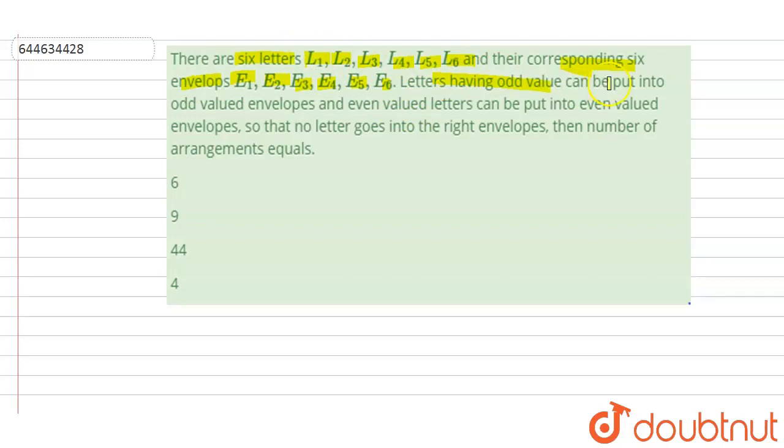L3, L5 can be put into the odd valued envelopes. Odd value envelopes means they can be put in E1, E3, and E5. And even valued letters means L2, L4, L6 can be put in the even valued envelope.